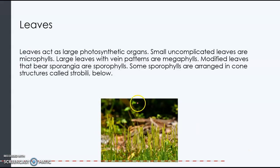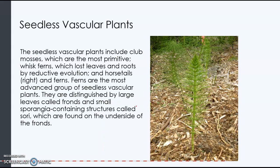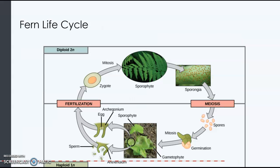The leaves of the plant are photosynthetic organs, so that is where photosynthesis occurs. In seedless vascular plants, which include club mosses, whisk ferns, and ferns — which are probably the ones you would recognize the quickest — all of these are vascular plants that produce spores instead of seeds. If you look at the life cycle of a fern, this is how it works.